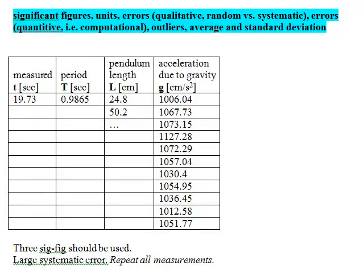In this recording, I'm going to use data from previous physics labs to look at significant figures, units, errors—both qualitative, random versus systematic errors—and also quantitative, that is computational errors. Furthermore, outliers, and then I'm also going to look at average and standard deviation and how to compute them.